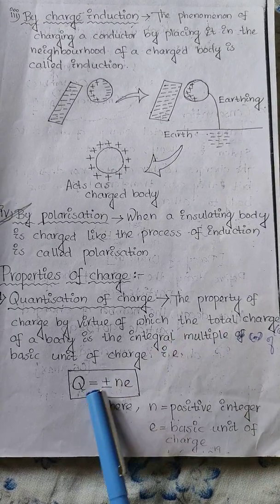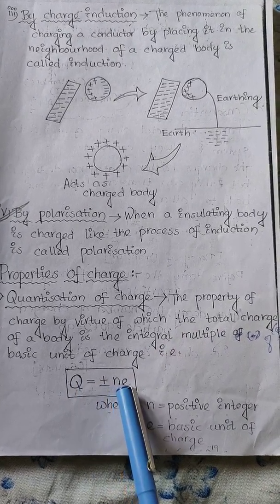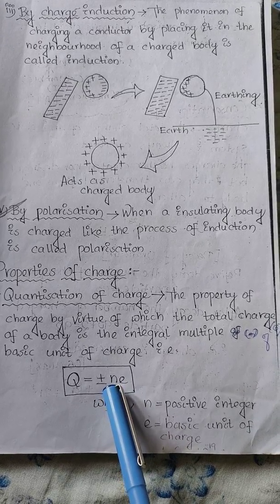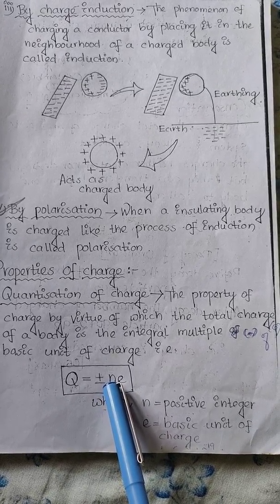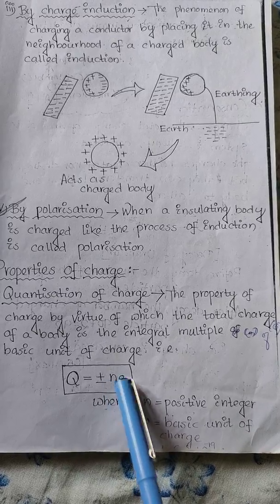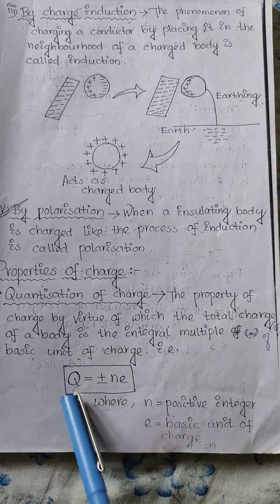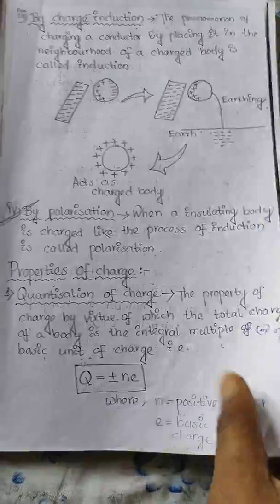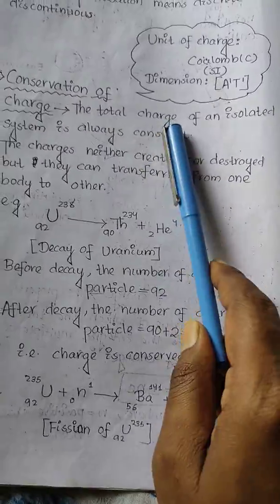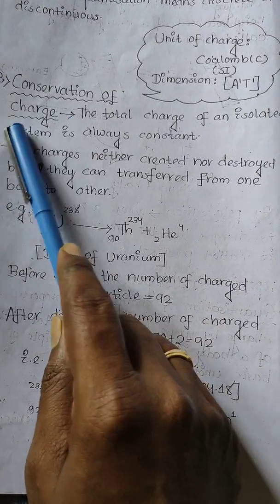The total charge of a body is an integral multiple of the basic unit of charge. The important formula for quantization is Q = ne, where n is the number of electrons gained or lost by the body, and e is the charge of an electron.